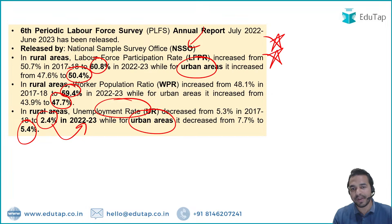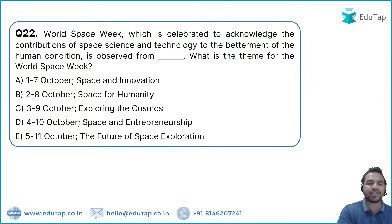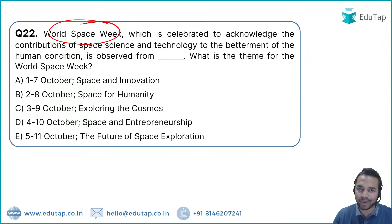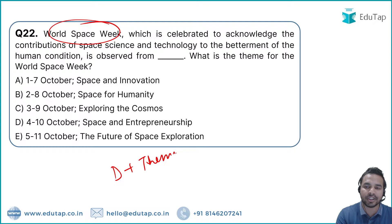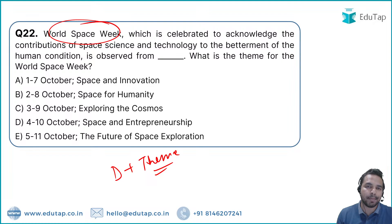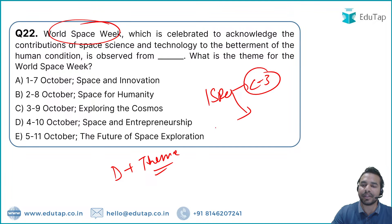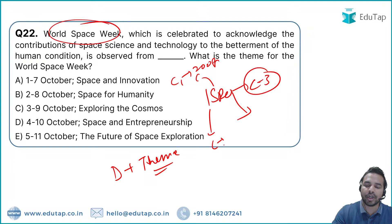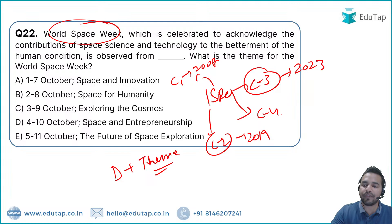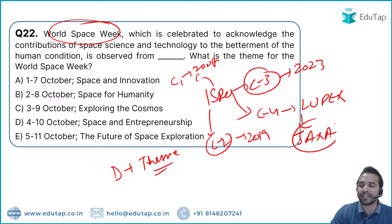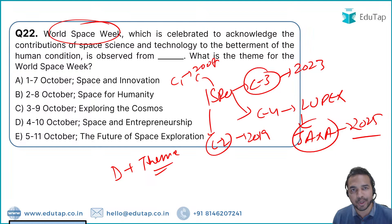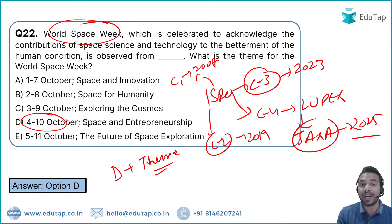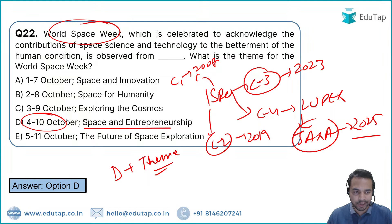Question 23: World Space Week is observed from 4th to 10th October 2023. The theme is 'Space and Entrepreneurship.' Chandrayaan 1 was launched in 2008, Chandrayaan 2 in 2019, Chandrayaan 3 in 2023, and Chandrayaan 4 is expected to launch in 2025. Option D is the right answer.